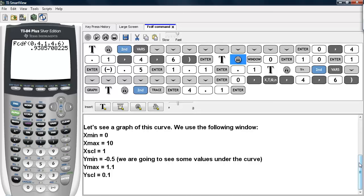Let's see a graph of this curve. We will use the following window: x min will be 0, x max will be 10, the x scale will be 1. The y min will be negative 0.5. We're going to use some values here under the curve, so we want to see this information. And the y max will be 1.1, and the scaling will be 0.1.